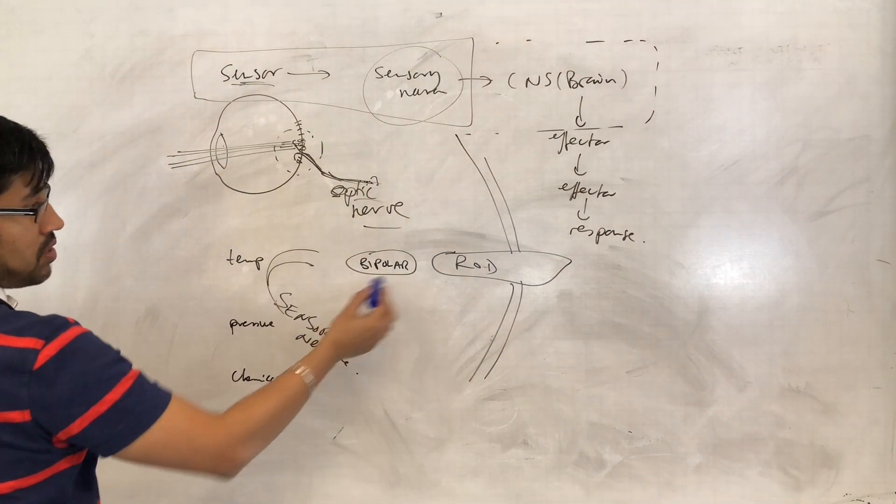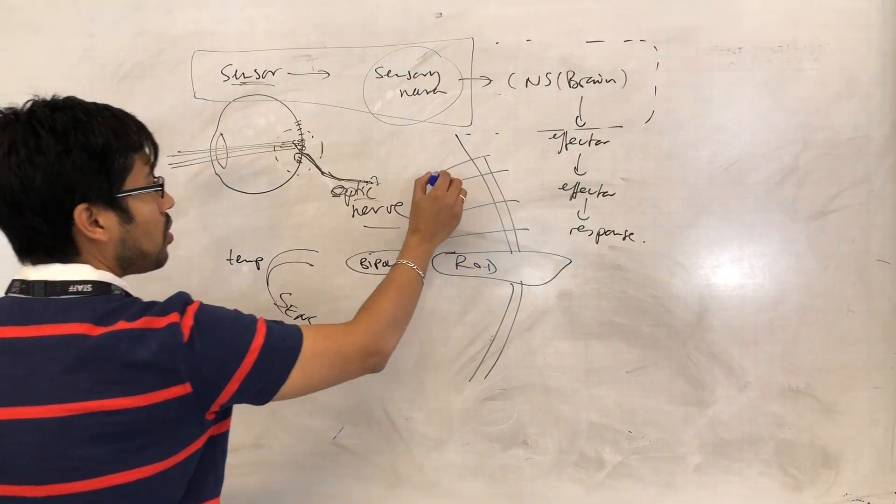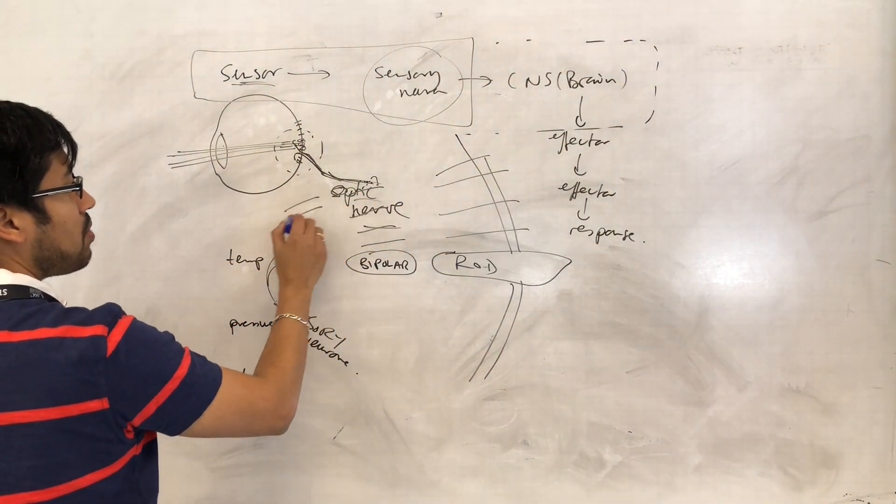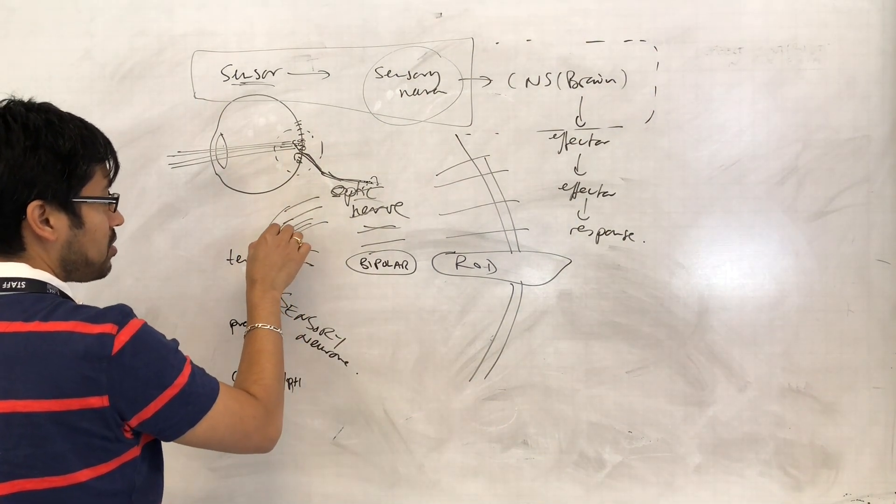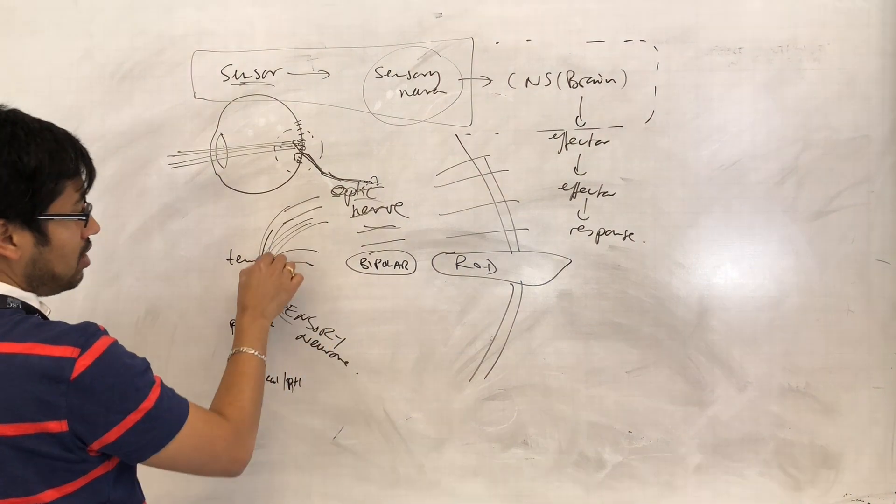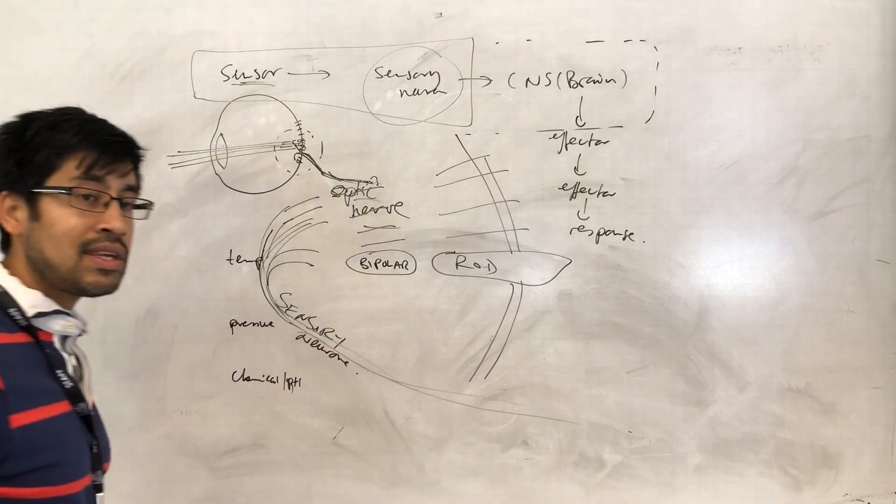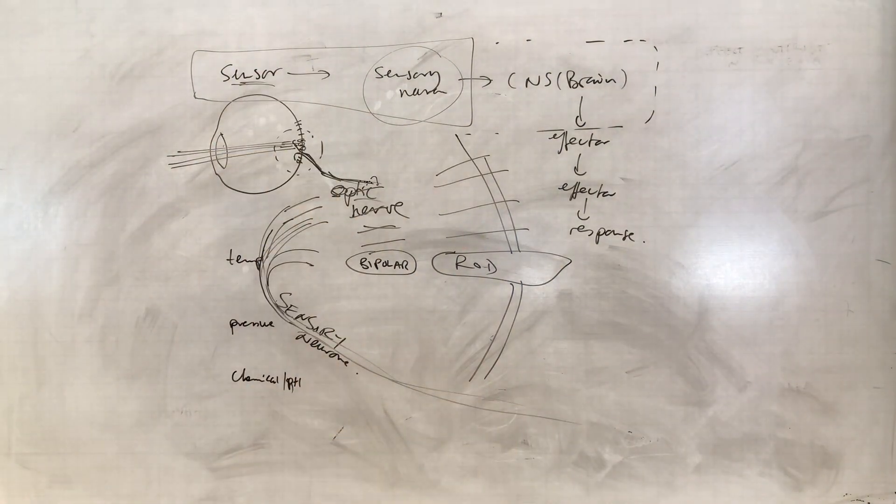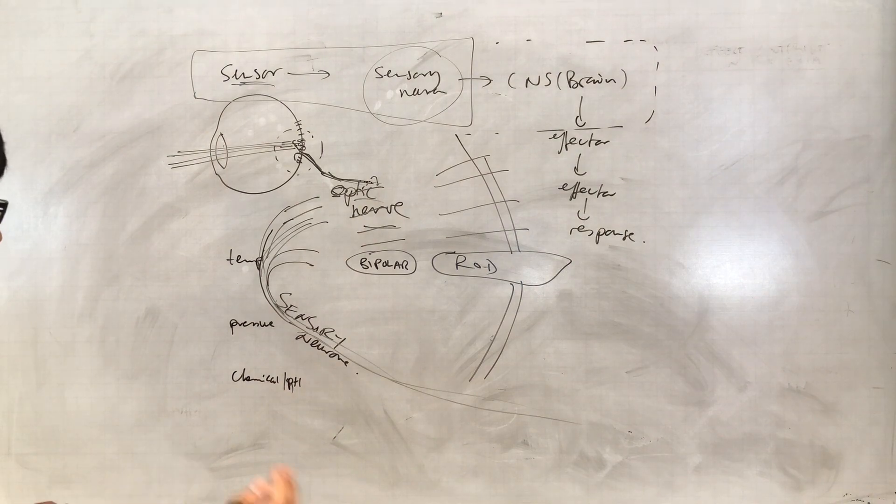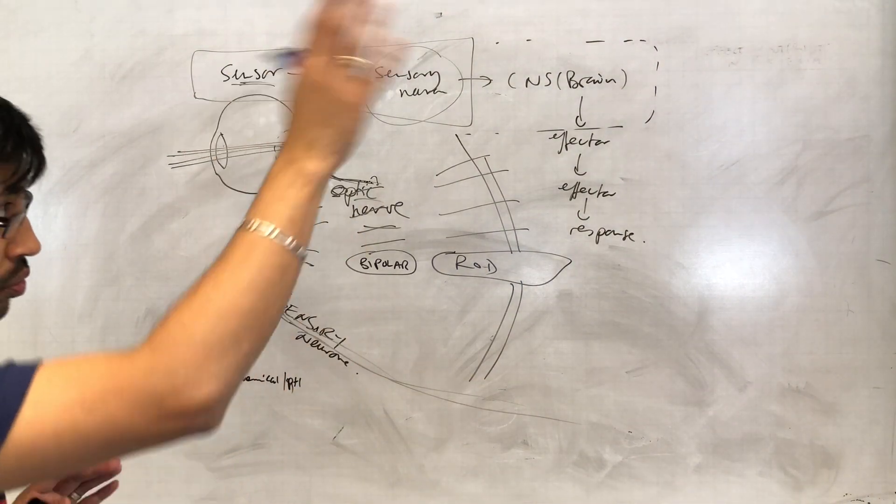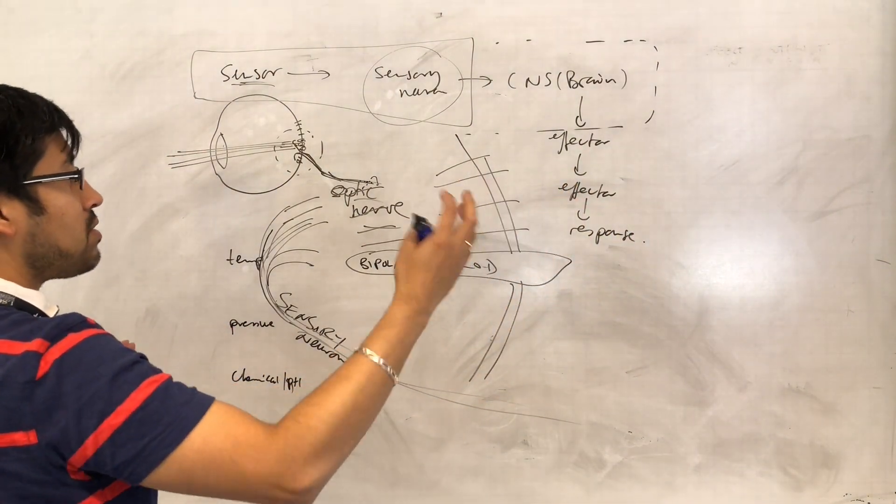That's just one connection. You've got many rod cells which are hooked up to bipolar cells which are themselves hooked up to other sensory neurons. These will all bundle together forming the optic nerve which exits the eye and goes to the brain, to the visual center in the brain, synapsing with those neurons in the brain where we interpret those signals as an image.